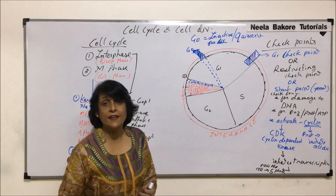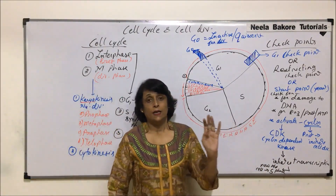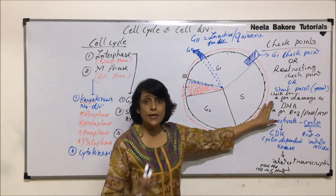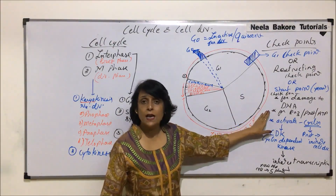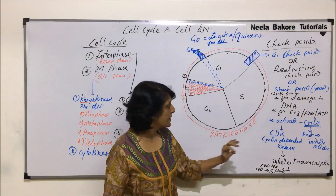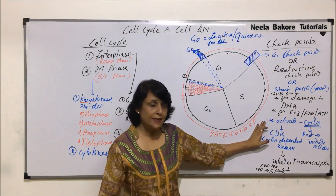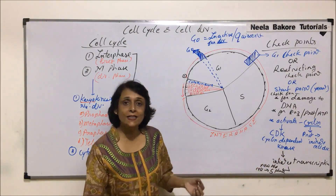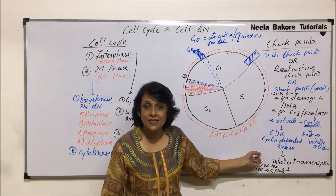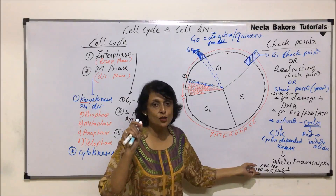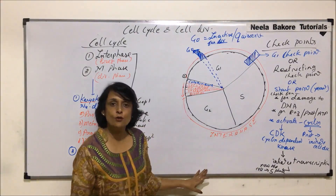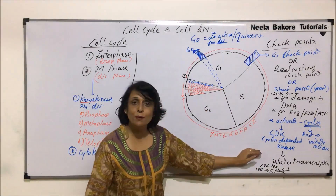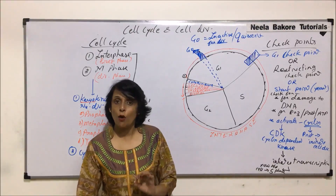To summarize the G1 checkpoint: it checks whether DNA is normal with no damage, and whether all enzymes, proteins, and ATP are synthesized. If everything is in order, cyclin gets activated, and this activated cyclin-dependent kinase initiates transcription — this is the guarantee that the cell is going to enter S phase. That is why we say that if a cell completes G1, it is committed for cell division.